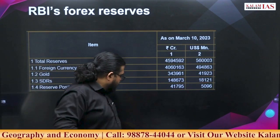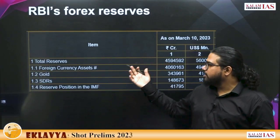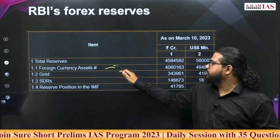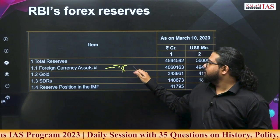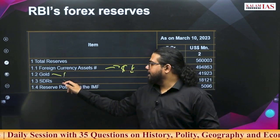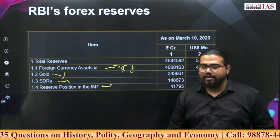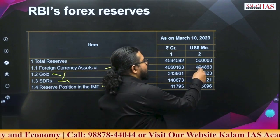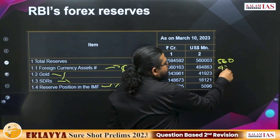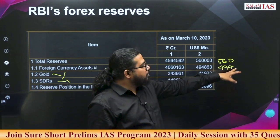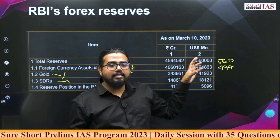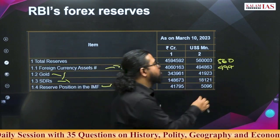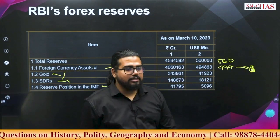Forex reserves are currently falling — we already discussed why. Forex reserves can be held in foreign currency assets like dollars, pounds, and sterling; gold; SDRs; and reserve tranche position in the IMF. Out of India's around 560 billion dollars in reserves, about 494 billion dollars are kept in foreign currency assets, most of which are held in US dollars.